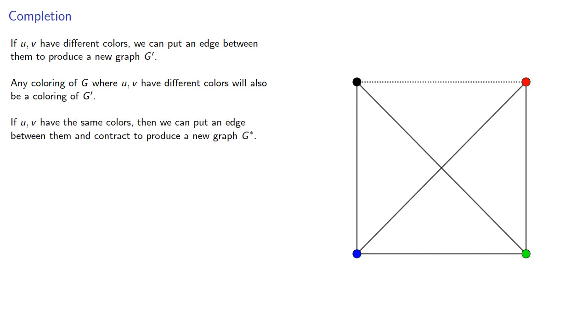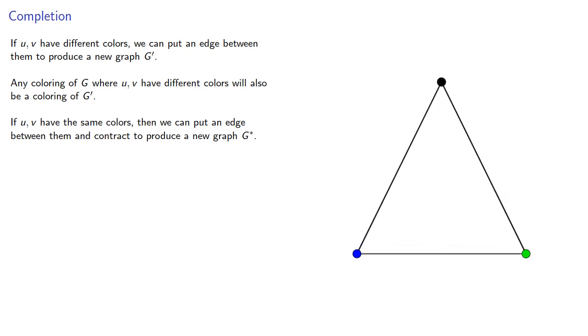If u and v have the same colors, we can put an edge between them and contract to produce a new graph, g star. And again, any coloring of g where u and v have the same colors will also be a coloring of g star.